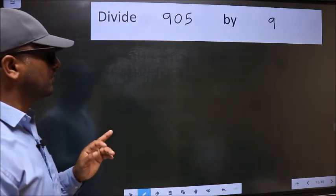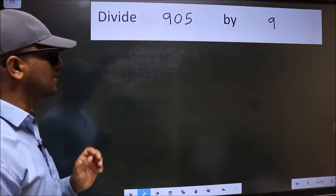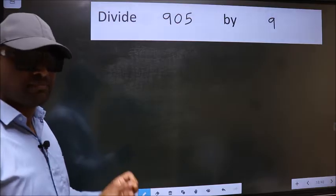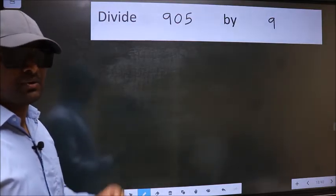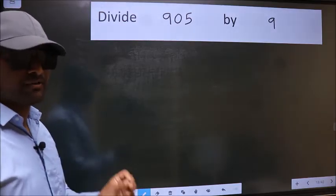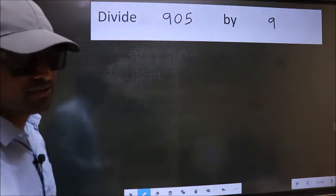Divide 905 by 9. While doing this division, many do this mistake. What is the mistake that they do? I will let you know. But before that, we should frame it in this way.